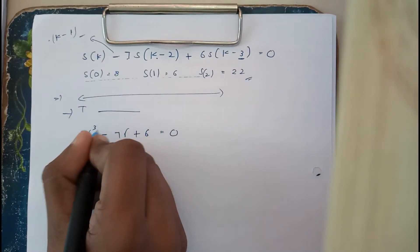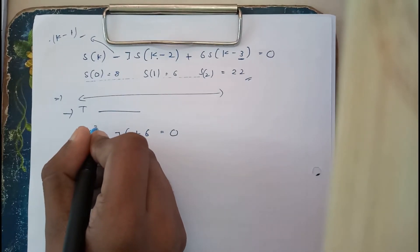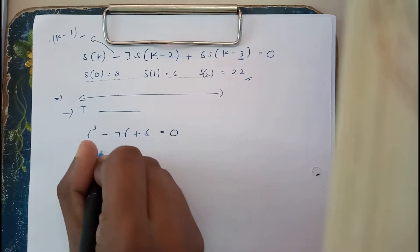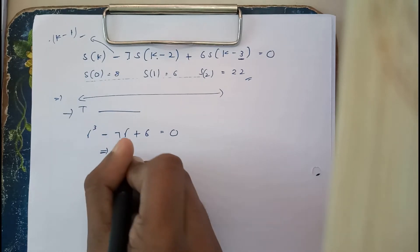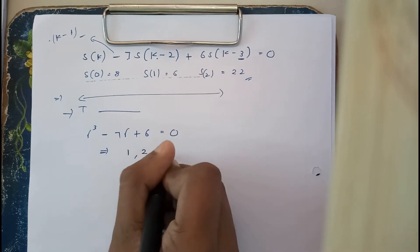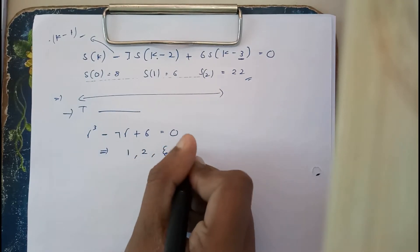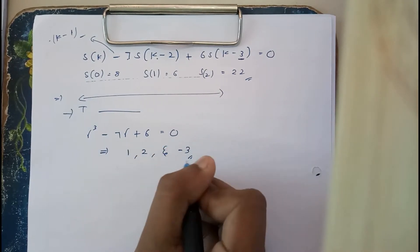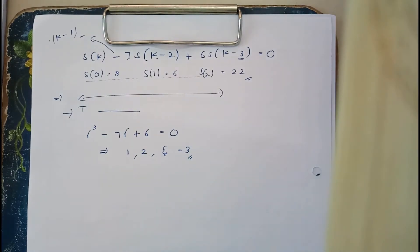Since the power is 3, we get three values. Using a calculator, the three roots are r = 1, r = 2, and r = −3.